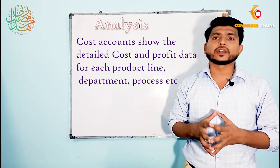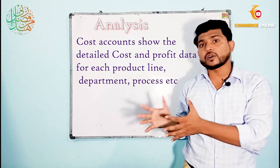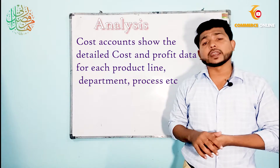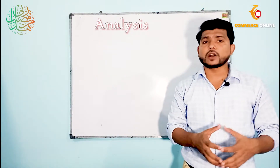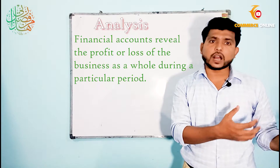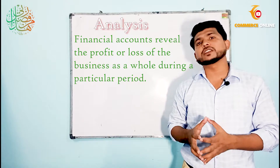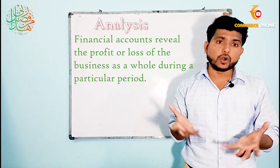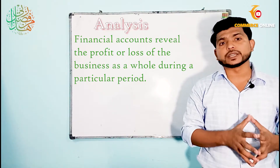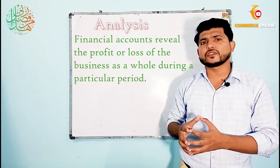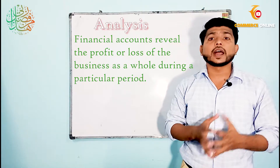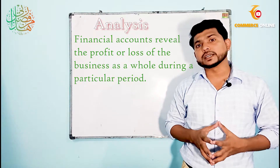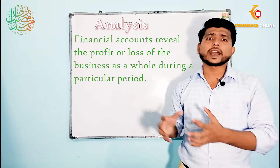Cost accounting shows detailed cost and profit data for each product line, department, and process. But financial accounting reveals the profit or loss of the business as a whole during a particular period. It does not show the figures of cost and profit for individual products, departments, or processes.